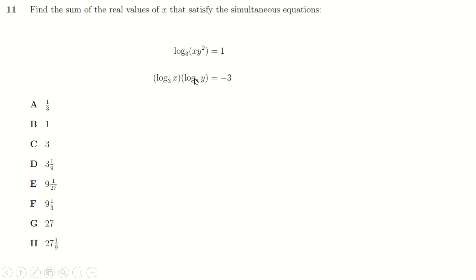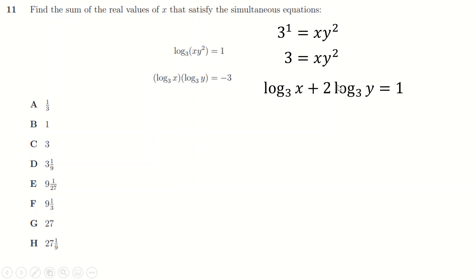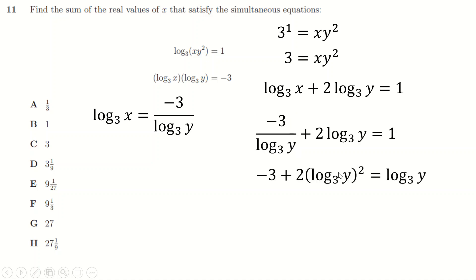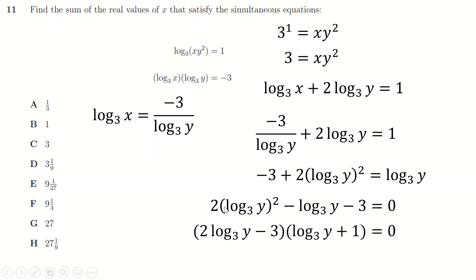Question eleven: from the logarithm equation, using log laws, log₃(xy²) = 1 becomes log₃x + 2·log₃y = 1. I rearrange to log₃x = (1 - 2·log₃y), then substitute into the second equation and multiply through by log₃y to get a quadratic in log₃y.